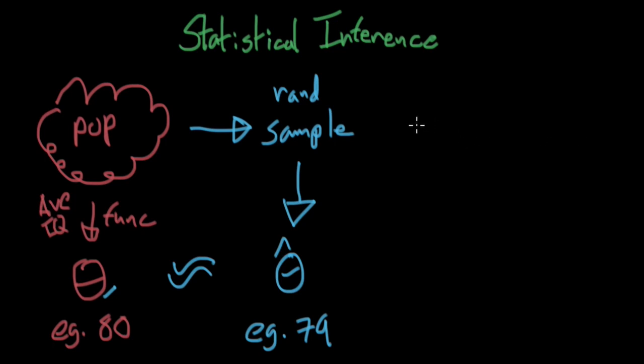A second thing that our sample can do, and that statistical inference can help us do, is it can make us a 90% confidence interval. And so this is an interval that goes from some number q low, all the way to another number q high, that has a 90% chance of containing the true population parameter.